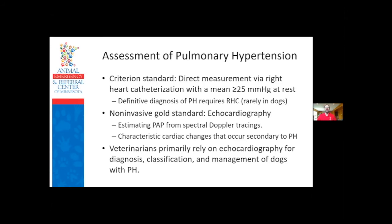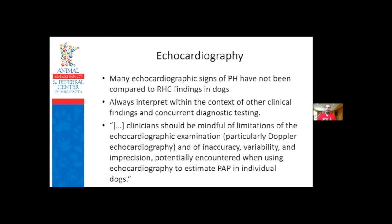With echo we're assessing: can we measure spectral Doppler tracings to get pressure estimates, and do we see secondary changes to the heart suggesting pulmonary hypertension is present? We use echo to diagnose pulmonary hypertension the majority of the time in dogs. Many echo findings haven't been validated simultaneously against right heart catheterization - some studies exist but were done under anesthesia, giving lower pressures. It's important to always interpret findings in the context of the clinical case. As the consensus statement notes: clinicians should be mindful of the limitations of echocardiographic exam and the inaccuracy, variability, and imprecision when using echo to estimate pulmonary artery pressures.